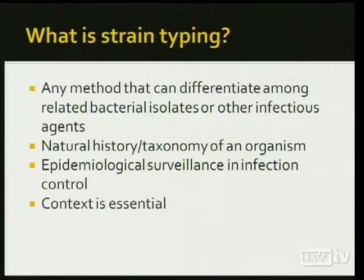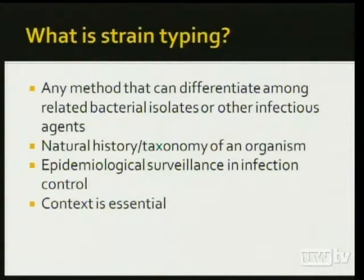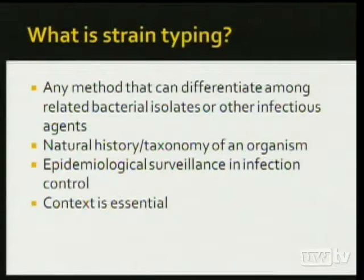What is strain typing? Any method that can differentiate among bacterial isolates or other infectious agents. This can either be looking at the natural history or taxonomy of an organism, or more specifically for epidemiological and outbreak surveillance and infection control. In this case, context is essential — you need to know where and from whom your organism came.